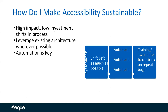How do we make accessibility sustainable? Tooling is a big part of this. The key tenets of a sustainable accessibility program are: first, shift left as much as possible, making high-impact, low-investment shifts in process to cut down the velocity of bugs moving through the pipeline. Second, employ as much automation as possible — where automation exists in testing, leverage those structures for accessibility testing. Third, training and awareness to cut back on repeat bugs, so issues of a given type are prevented from ever making their way into the product again.